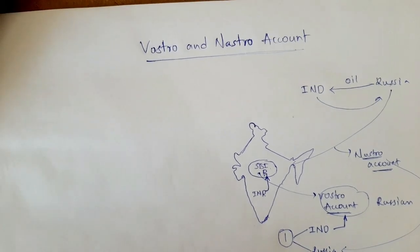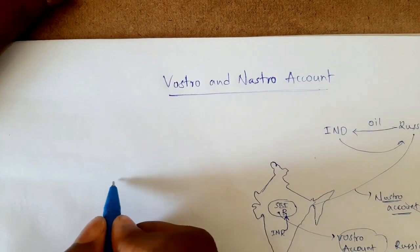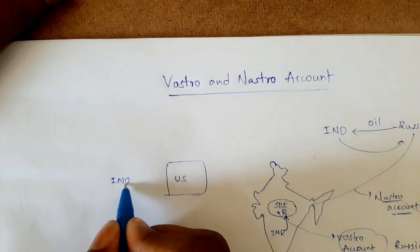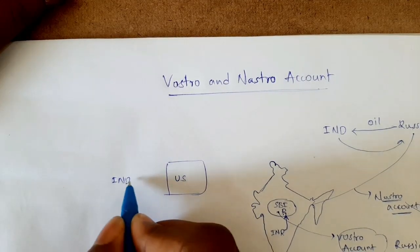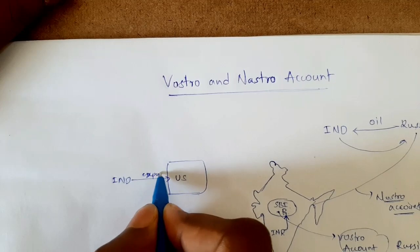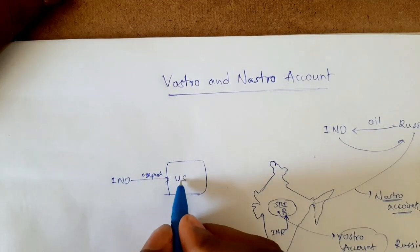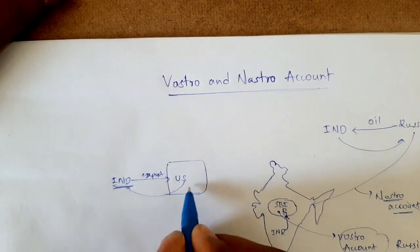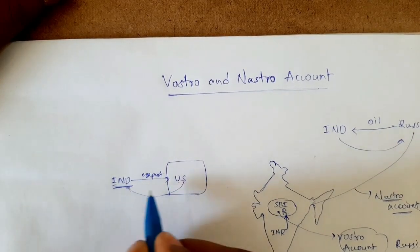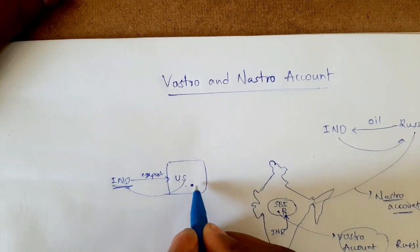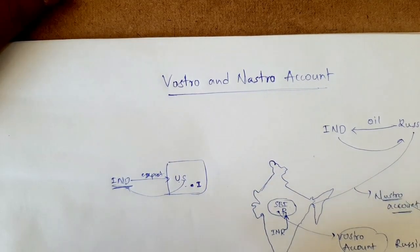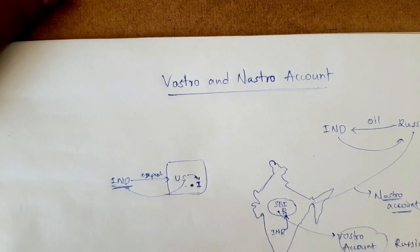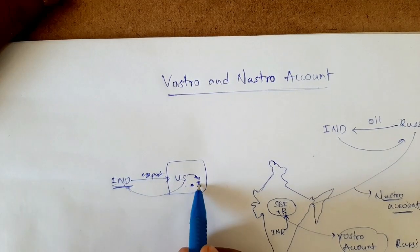Let me give another example to make it more clear. Let's say India and the US: India exports some goods to the US. So India has to receive payment from the US. To make this easy, India opens an account in the US so that US people can easily deposit the payment amount into it.